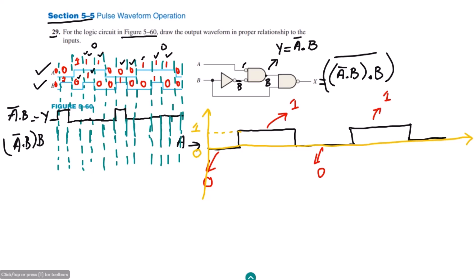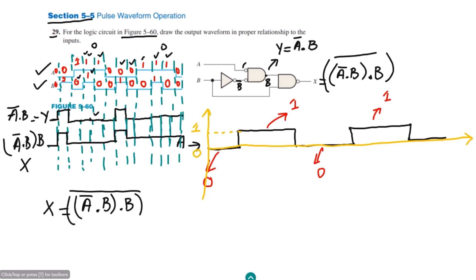If any one of the inputs is 0, the product is 0. In the first instance B is 0 so the result is 0. In the second instance both are 1, so it is 1. In the third instance B is 0 so it remains 0. Throughout the middle intervals the level is also 0 so the product remains 0. Where both inputs are 1 the result is 1, and where any input is 0 the result is 0. Finally X is the complement of this, which is the overall opposite.